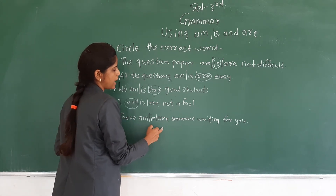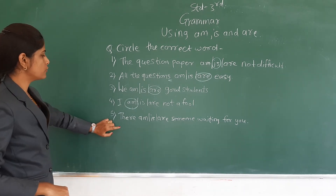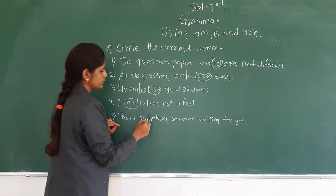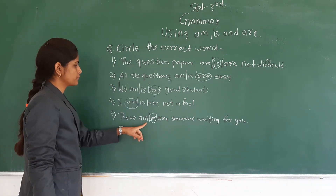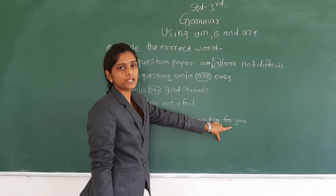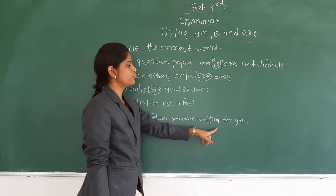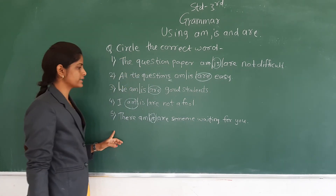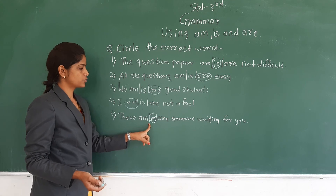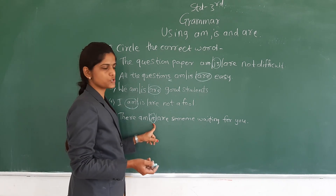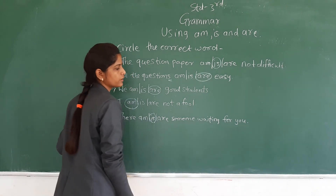What is for: there — am, is, or are — someone waiting for you? Is will come. Why is only? Because this sentence tells about another person. Is is used to describe another person. So: there is someone waiting for you. Someone is telling about another person, so is is used as the term.